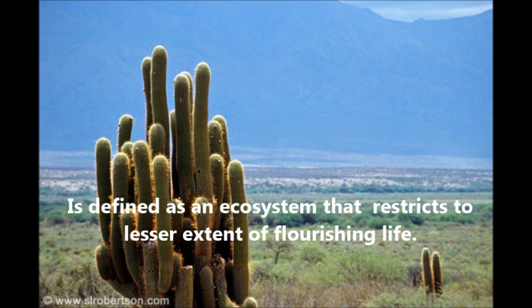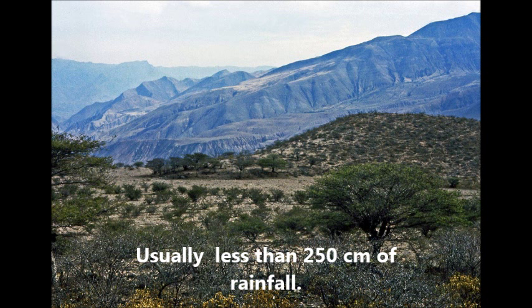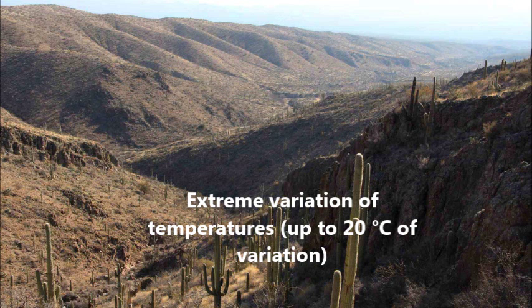Desert Scrub. It is the driest ecosystem that restricts the lesser extent of flourishing life. Usually less than 200 centimeters of rainfall, with extreme variation of temperatures up to 20 Celsius of variation.